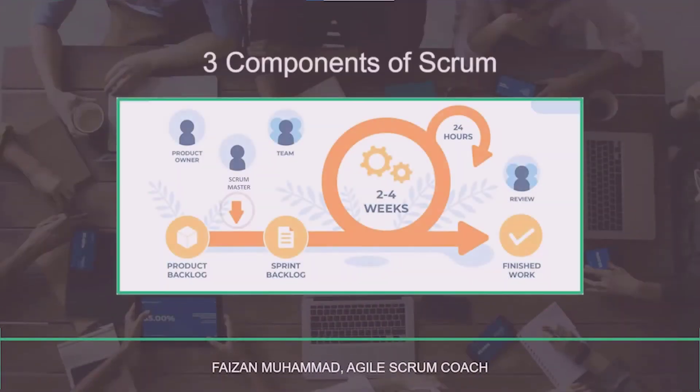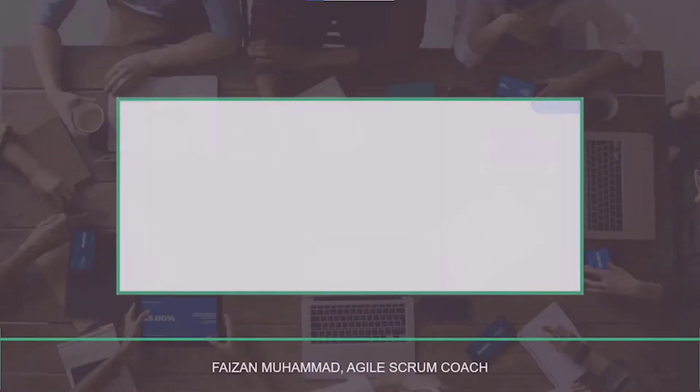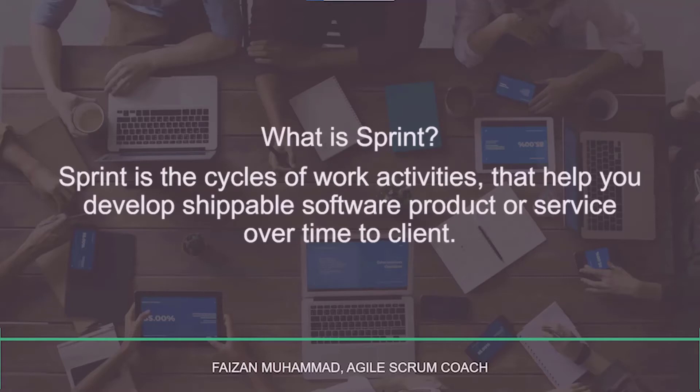The next component is scrum events or ceremonies. The first is the scrum grooming or backlog refinement meeting — a meeting with your client where you list down all that is needed for the product. Followed by the sprint planning meeting. A sprint is the cycle of work activities that help you develop shippable software over time. It's a cycle of four to five days or even a week, delivering a certain product to the client. For example, the first sprint produces the chat function.